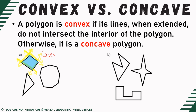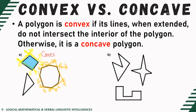Now let's proceed to the next one. If I'm going to extend the sides of this given figure as well, can you see any extended line which passes through the interior points or the interior surface of the given polygon? As you can see, it does not pass through the interior points of this polygon. Hence, we can conclude that this is also a convex polygon.